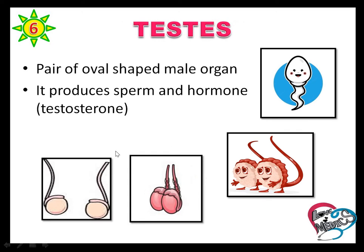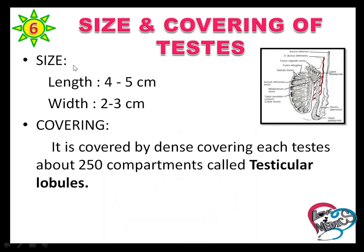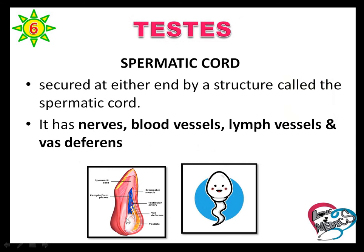The scrotum has a special type of muscle that keeps the testes at a temperature slightly cooler than the body, which is necessary for sperm production. The testis is an oval-shaped organ that produces sperm and the hormone testosterone. Just as the female gonad is the ovary, the male gonad is the testis. The size of the testis is four to five centimeters in length and two to three centimeters in width.